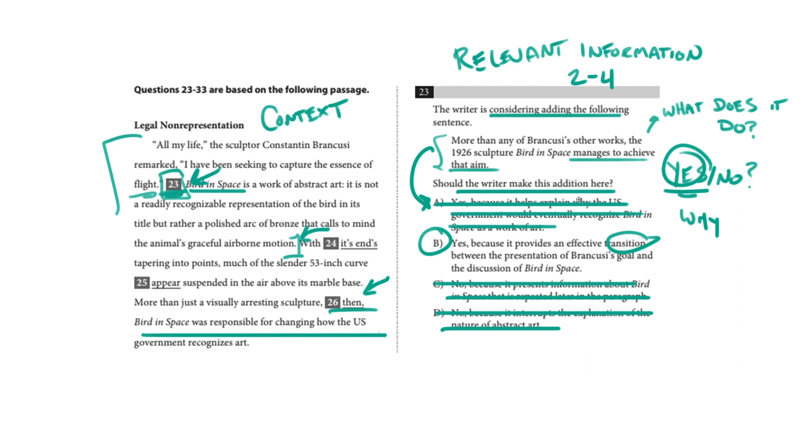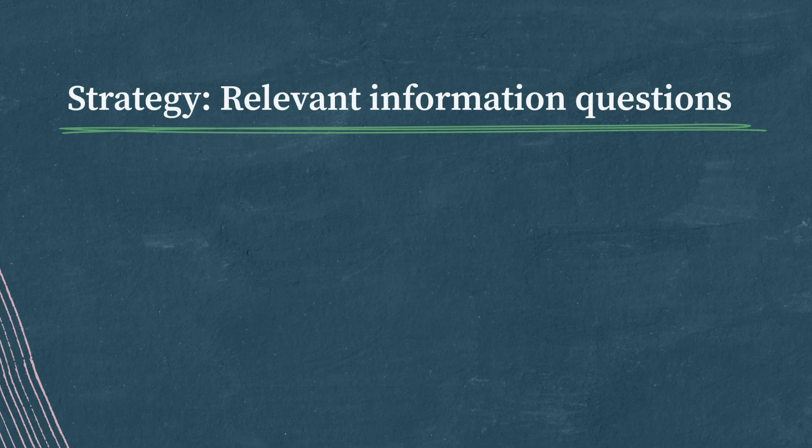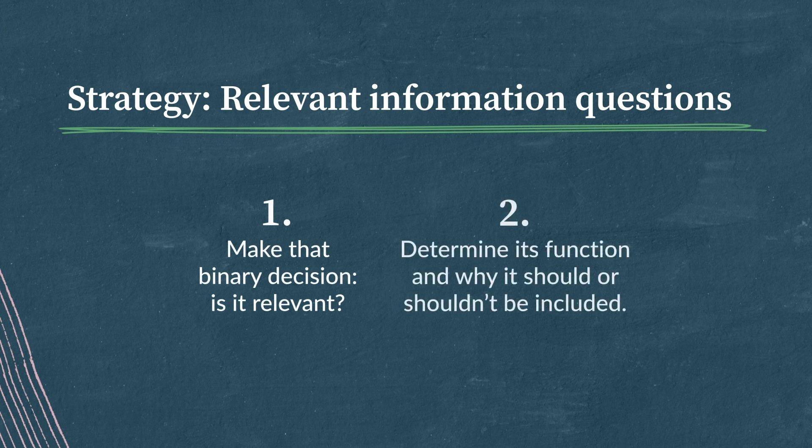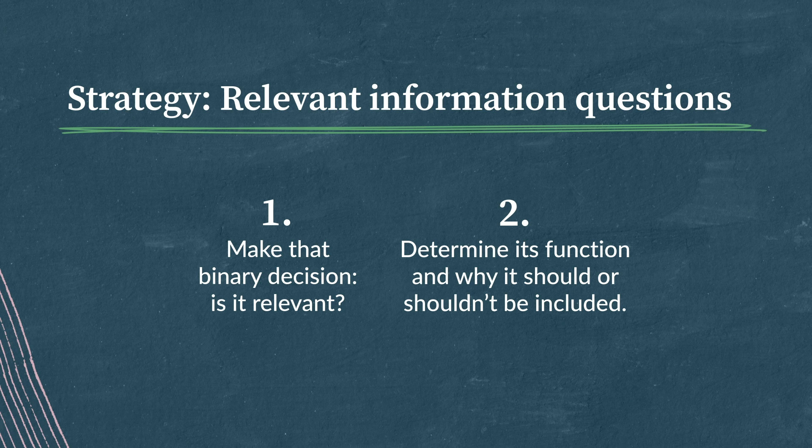So, we're trying to determine, does it fit in and why? So, your strategy for relevant information questions like this is first to make that binary yes or no decision, and then determine the function of the sentence to help you figure out the reason to include it or not.